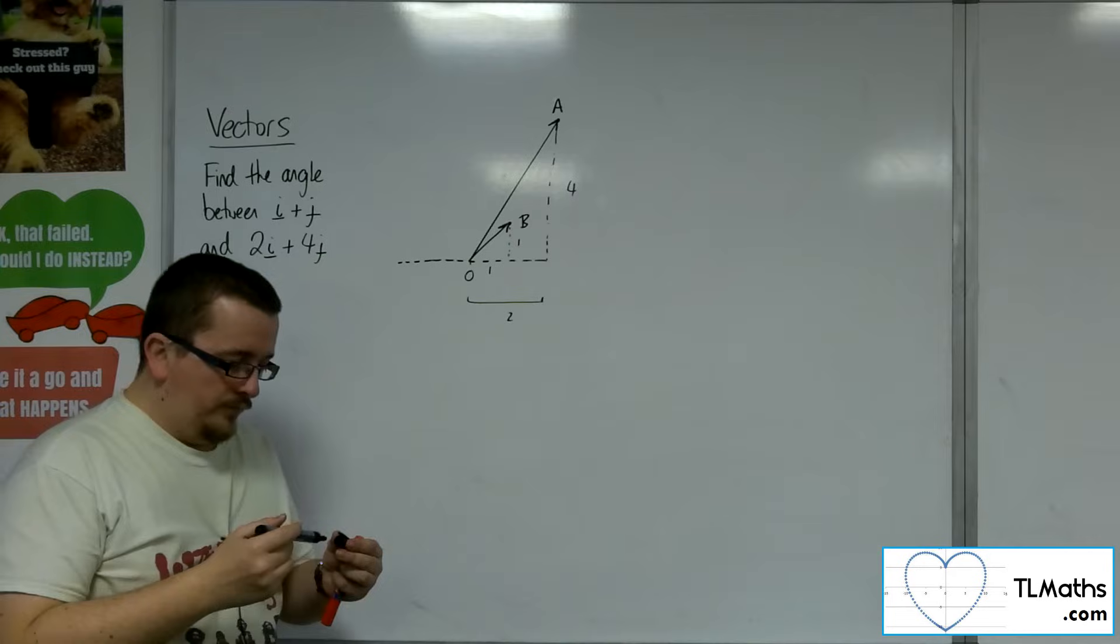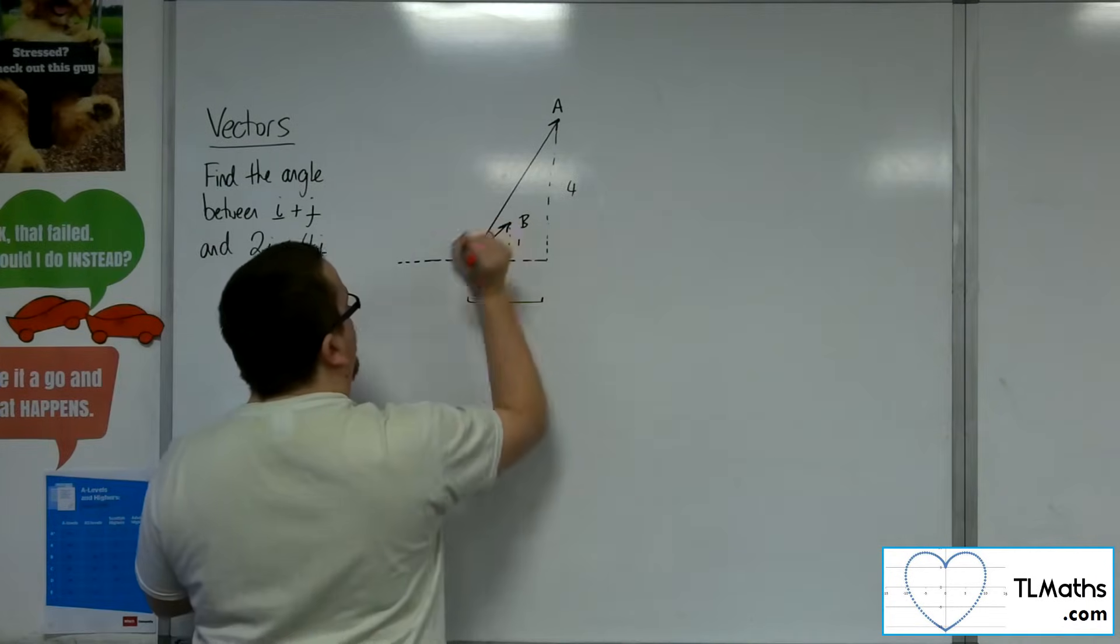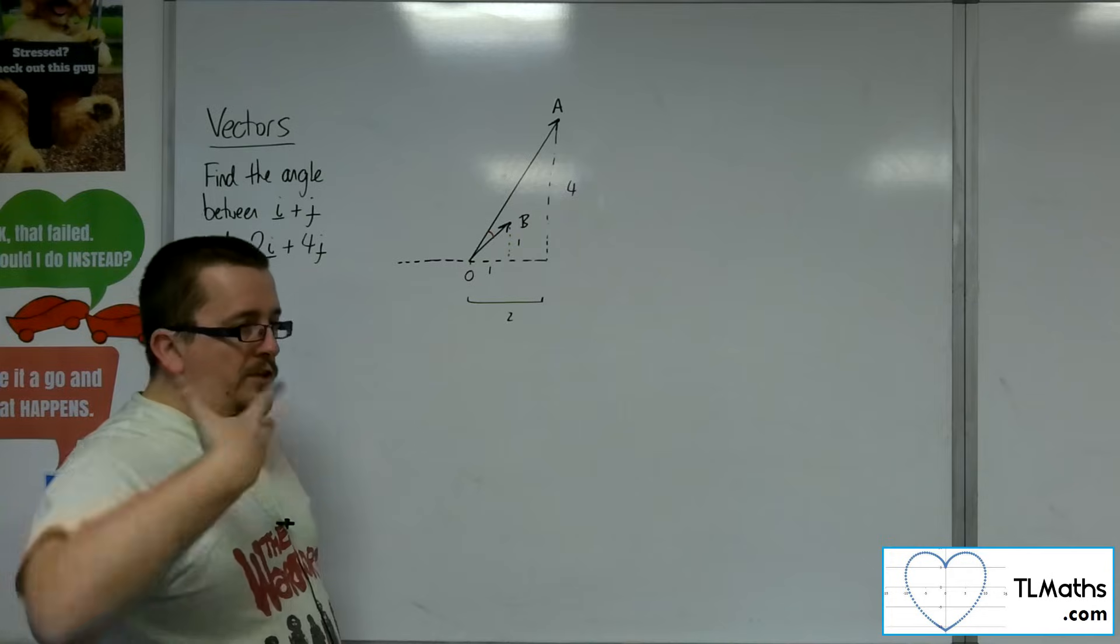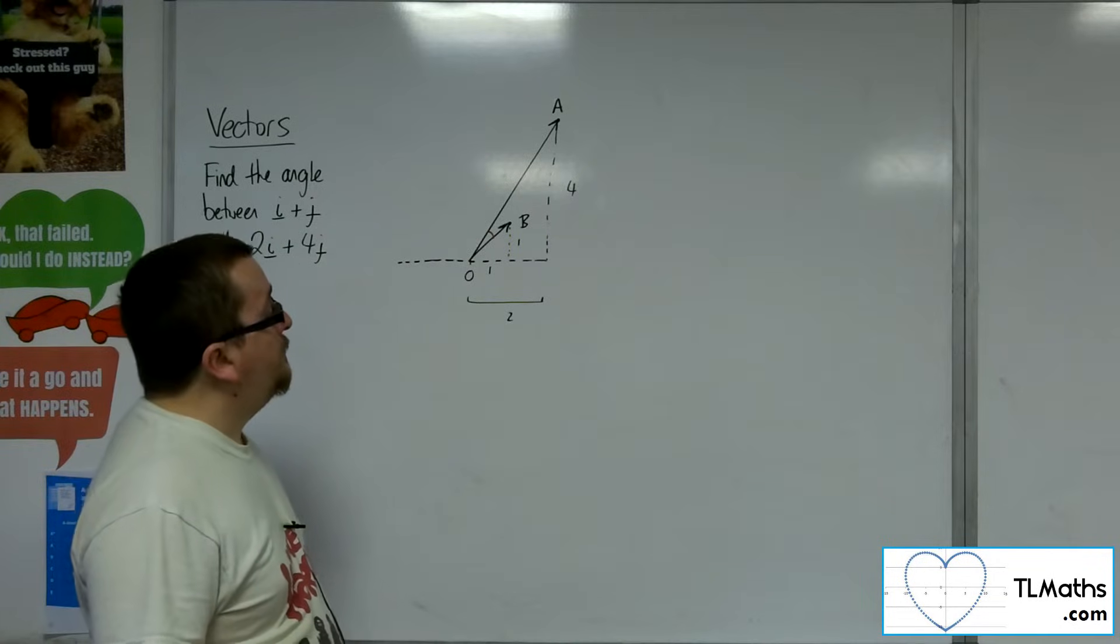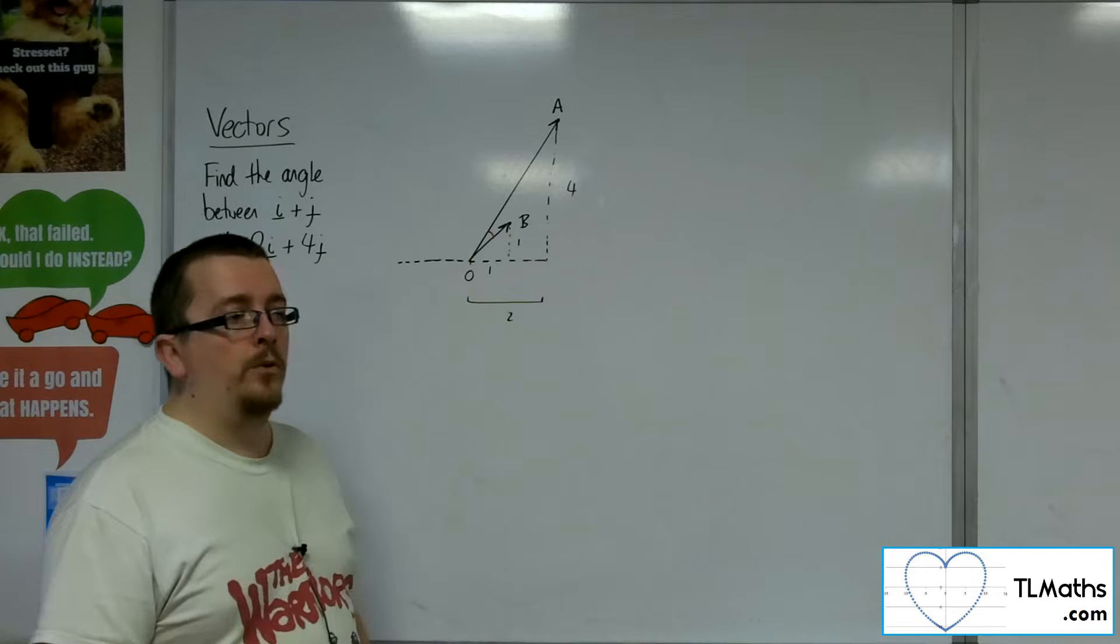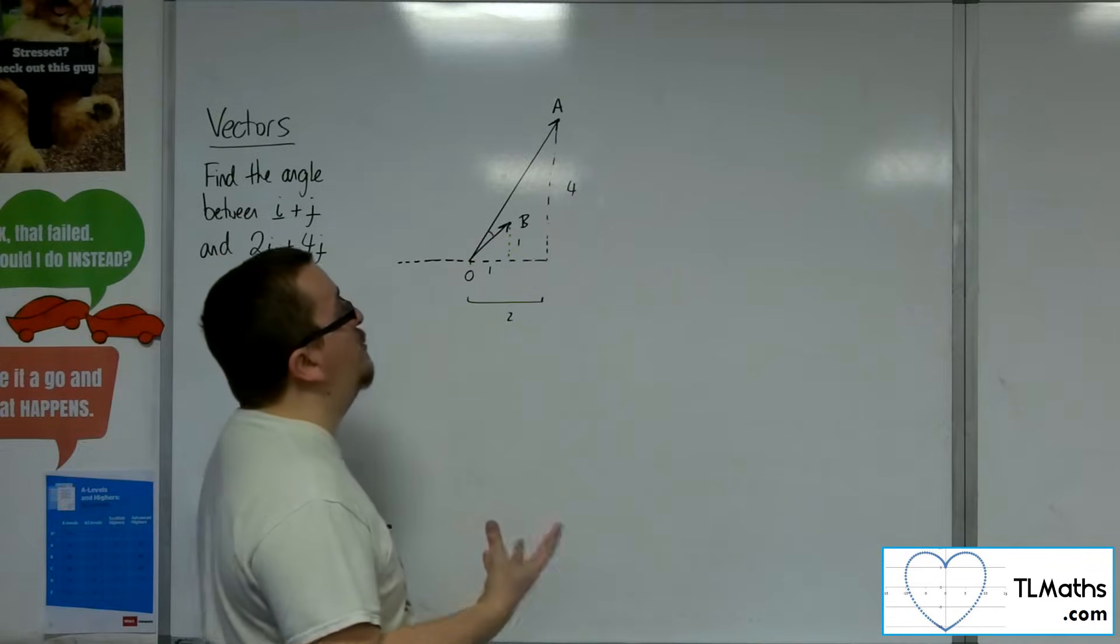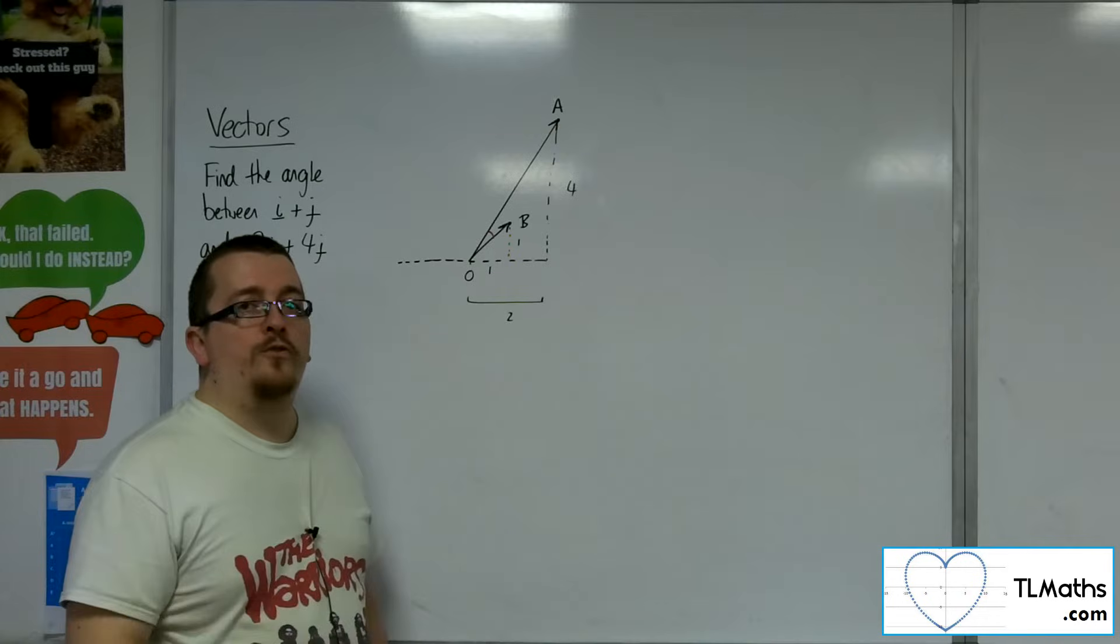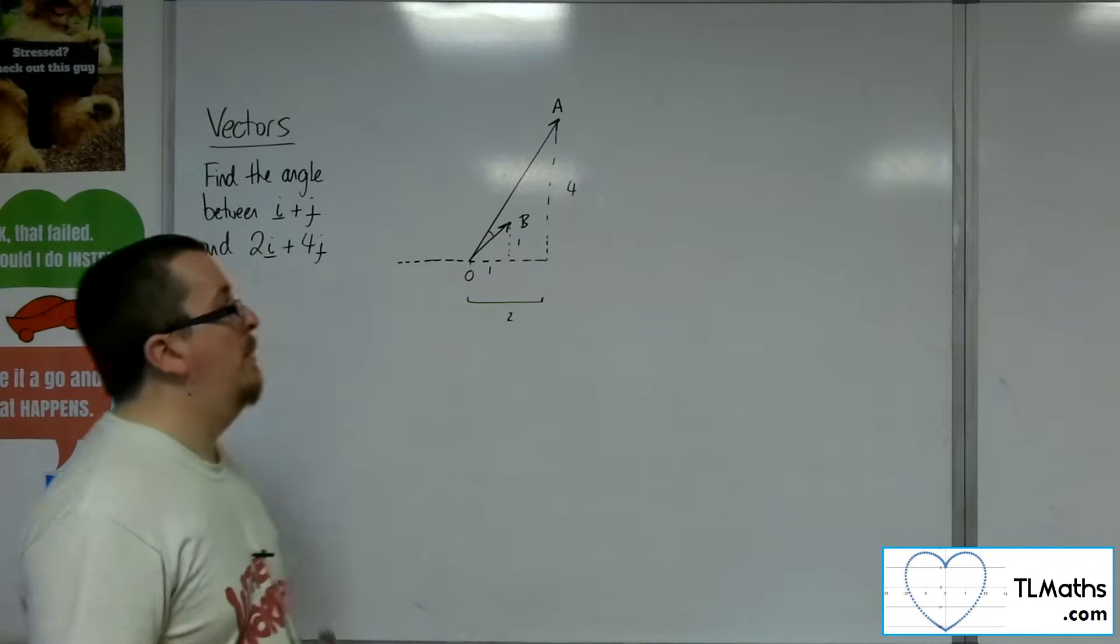Now there are two possible routes through to find the required angle, so that angle there between the two vectors. Now one possible route through, well, there's two possible routes through that we can do with the current skills that we have. The other route through to find the angle between two vectors is to use the scalar product or dot product, which we don't actually cover in this course. So that would be the general method. I'm going to show you a method for two-dimensional vectors here and also a secondary method which will work for three-dimensional vectors as well because this two-dimensional one that I'm just about to show will not work for three-D vectors. But will work in two-D cases.